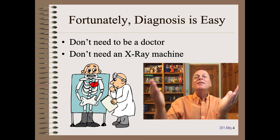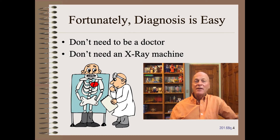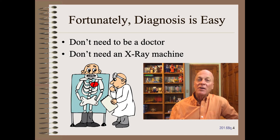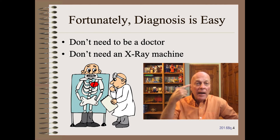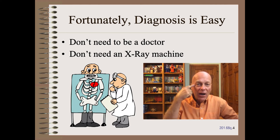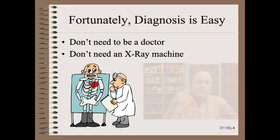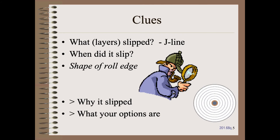Fortunately, diagnosis is easy. You don't need to be a doctor. You don't need an x-ray machine. All you need is your eyes and careful observation. There are many clues that are easy to gather: which layers slip, when did those layers slip, what is the shape of the roll edge? Once you gather these and other clues, you will know why it slipped and what your options are.